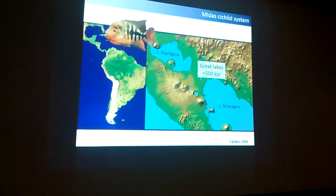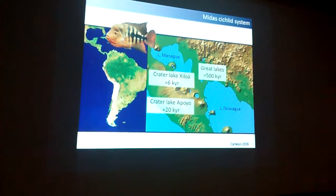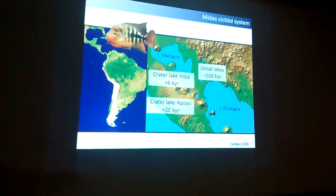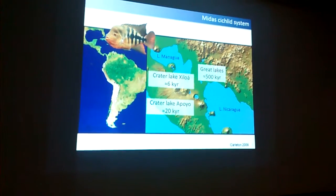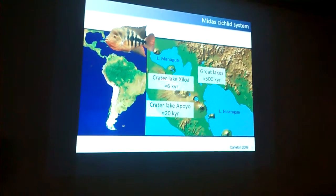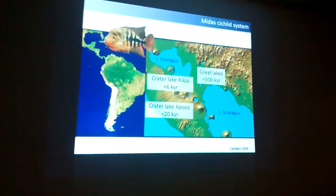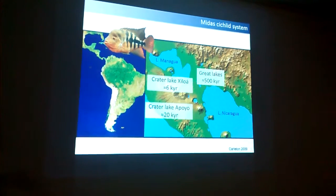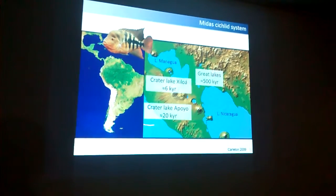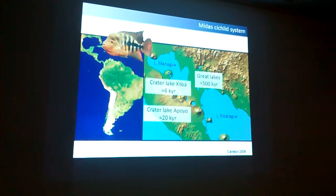These great lakes are not very old — more or less half a million years old. But the crater lakes are really, really young. The oldest one, Lake Apoyo, is 20,000 years old, and it has produced a radiation resulting in six different species. The second crater lake, Lake Xiloá, is 6,000 years old. Current estimates tell us that the Midas cichlid in Lake Apoyo is roughly 2,000 generations old, and in Lake Xiloá, 1,000 to 2,000 generations old.